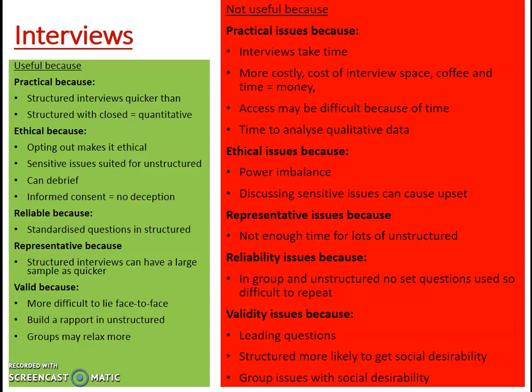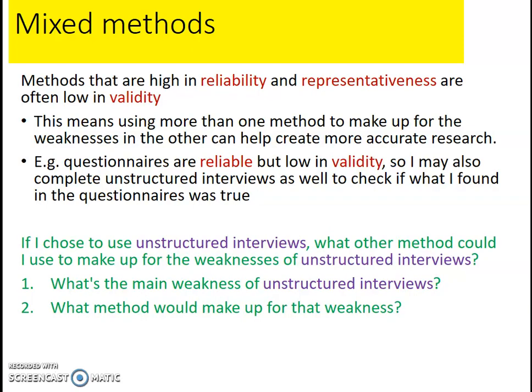So that's examining the usefulness of interviews. Just to finish by talking very briefly about mixed methods — methods that are generally high in reliability and representativeness are often low in validity. You generally want to find a weakness in one method and make up for it using a strength in another. For example, questionnaires are reliable but low in validity, so you might use unstructured interviews to check what you found was true. Have a go at this activity: if you wanted to use unstructured interviews, what's the main weakness, and what method could you use to make up for that weakness?